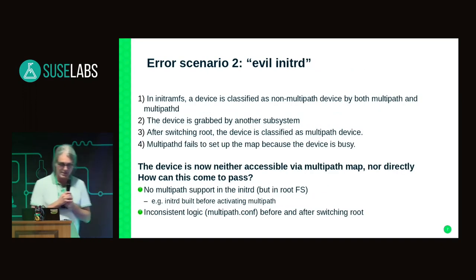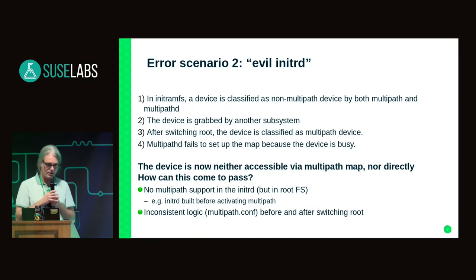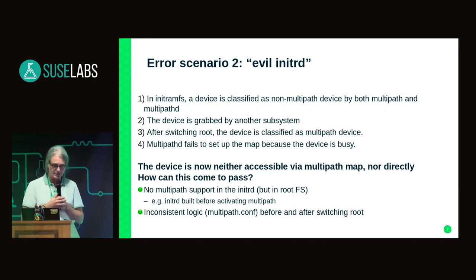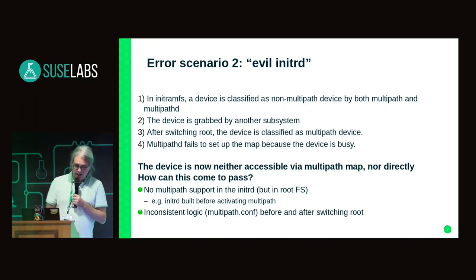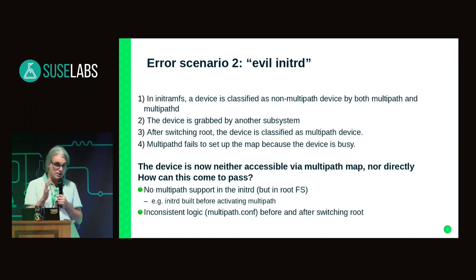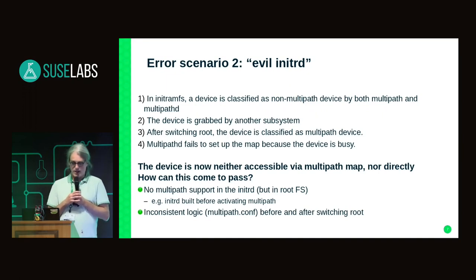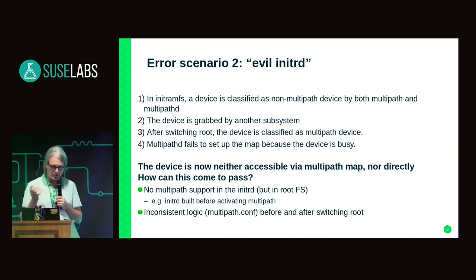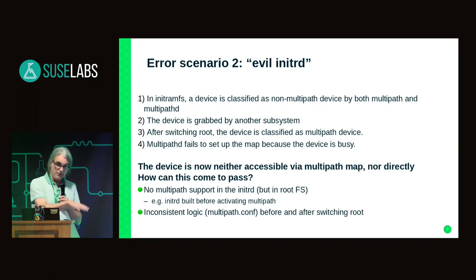In the second scenario, 'evil initramfs,' it is similar but not the same. In the initrd, the device is classified as non-multipath, and it means that some other process such as LVM grabs the device. Then we switch root and now we get a different opinion about the device — we now think it's a multipath device and try to set it up. Multipathd tries, fails because the device has already been grabbed by something else. The device is now neither accessible either way. It can happen that volumes from LVM set up in the initial RAM disk are still usable, but you cannot set up anything else on that device anymore.